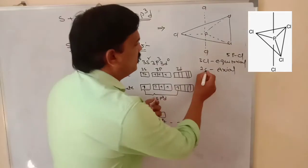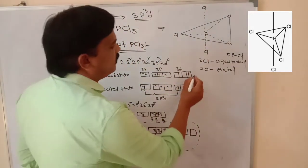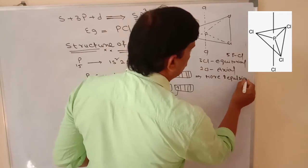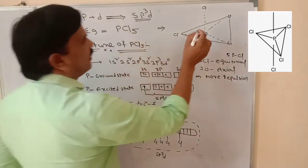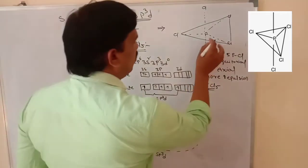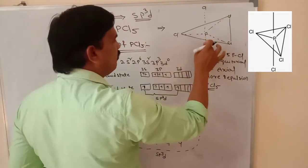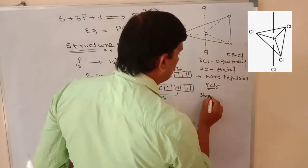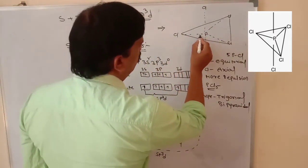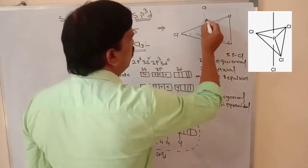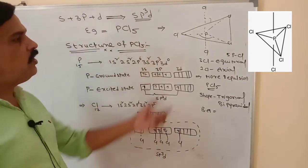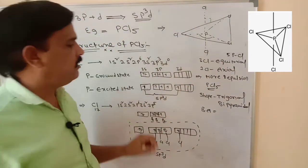These two chlorines are in the axial position. The two axial chlorines show more repulsion compared to the three equatorial chlorines. The shape of the molecule is trigonal bipyramidal. The equatorial bond angle is 120 degrees, and the axial bond angle is 90 degrees. Three chlorines are in equatorial position and two chlorines are in axial position.